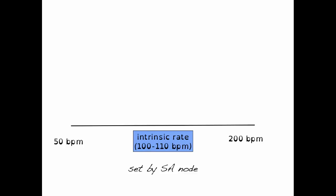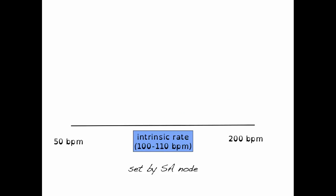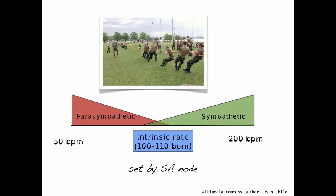We can illustrate the interplay between sympathetic and parasympathetic divisions of the nervous system in controlling heart rate in this graph. If the SA node was left to its own devices, its intrinsic rate would be between 100 to 110 beats per minute. With sympathetic stimulation of the SA node, this intrinsic rate is sped up. In contrast, parasympathetic activation leads to a slowing down of this intrinsic rate. We can think about the interplay between the sympathetic and parasympathetic systems as a tug of war — sometimes the sympathetic division is dominating, while other times the parasympathetic division is dominating.